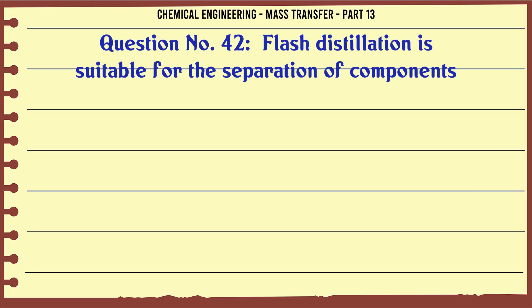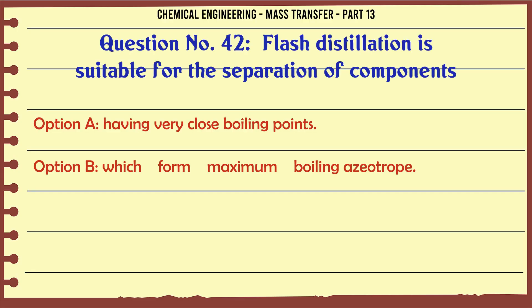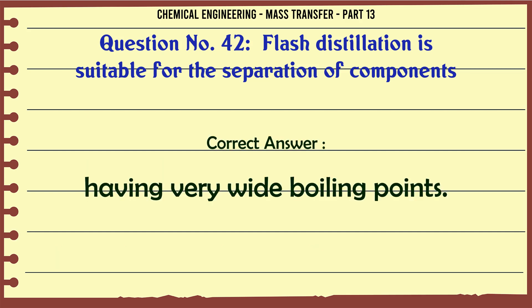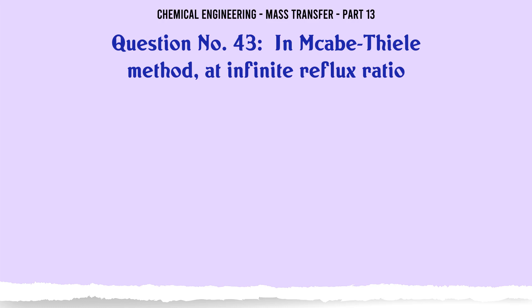Flash distillation is suitable for the separation of components: A. Having very close boiling points. B. Which form maximum boiling azeotrope. C. Having very wide boiling points. D. Which form minimum boiling azeotrope. The correct answer is: Having very wide boiling points.